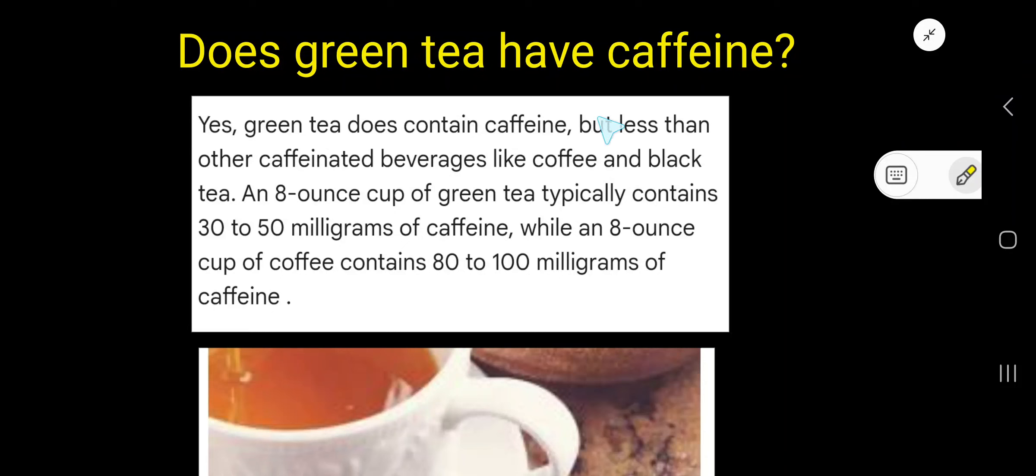Does green tea have caffeine? Yes, green tea does contain caffeine, but less than other caffeinated beverages like coffee and black tea. That is, green tea has less caffeine than coffee and black tea.